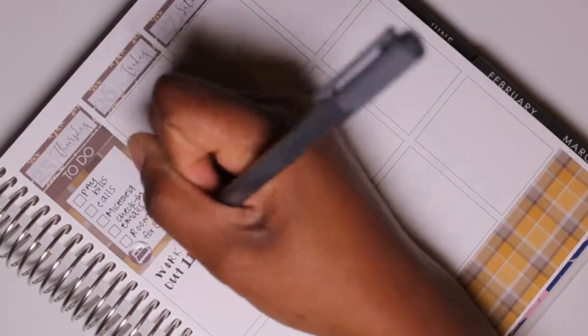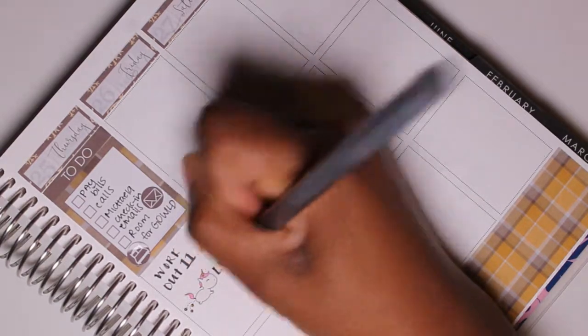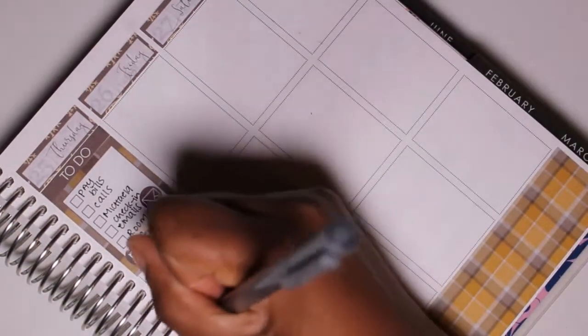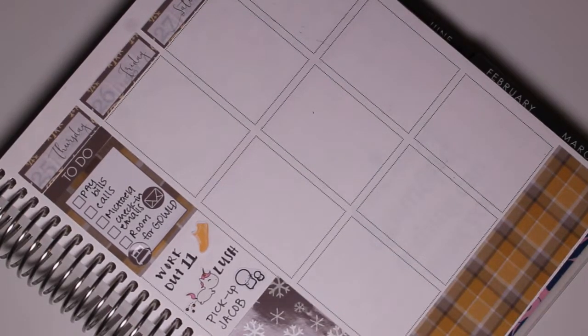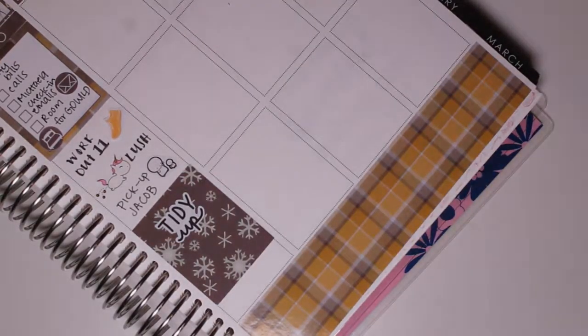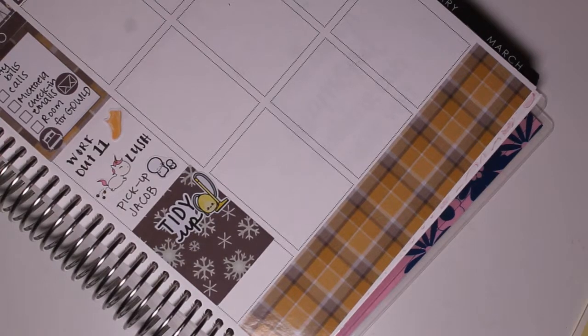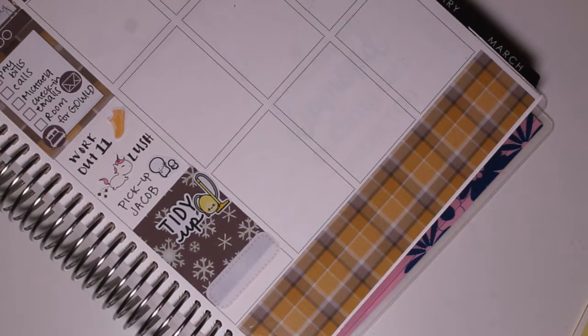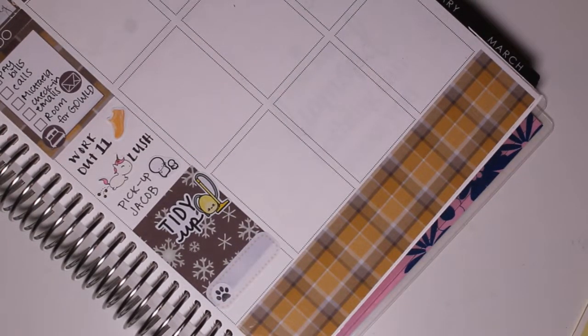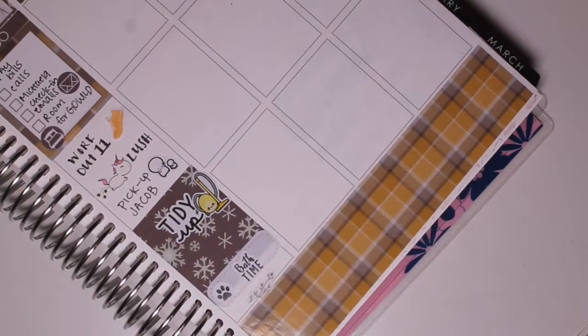Then I put down that sticker from I believe Planner Frenzy to note that I did workout 11. And then that sticker is from Frankhearts U and I just wanted to note my feelings about what I spent at Lush. And then I had to pick up my baby Jacob from daycare and then we headed home where I tidied up. Both tidy up stickers are from Stick with Me Shop. Then I needed to give my dog Jackson a bath. That sticker's from Sweet Glass Poopery. Then I just put a little bit of deco down and moved to Friday.